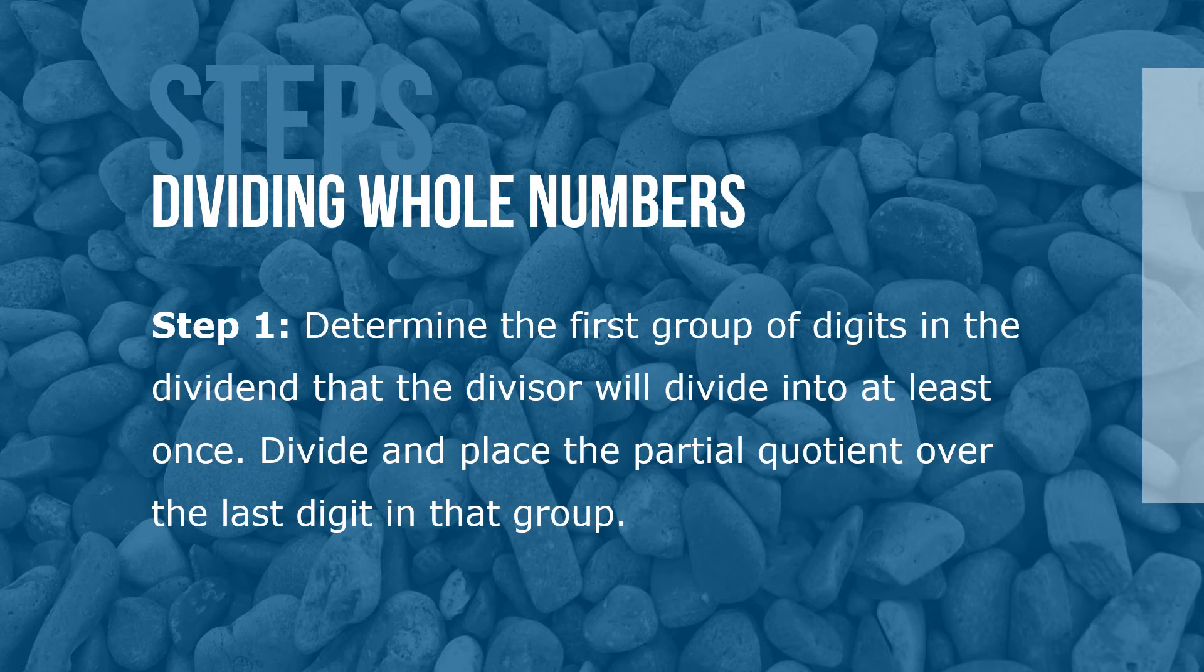Here are your steps for dividing whole numbers. Step 1: Determine the first group of digits in the dividend that the divisor will divide into at least once. Divide and place the partial quotient over the last digit in that group.